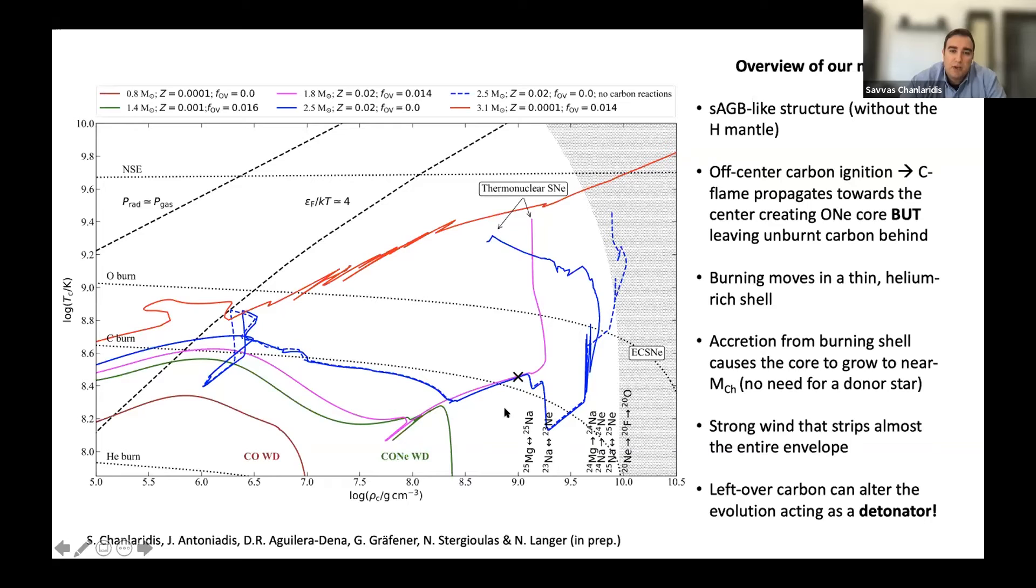And as you see, in contrast to the oxygen-neon cores, this hybrid core ignites carbon due to compressional heating in a process that closely resembles a typical supernova Ia progenitor.